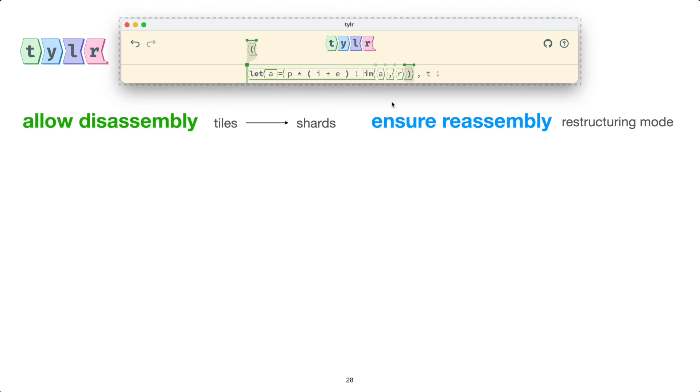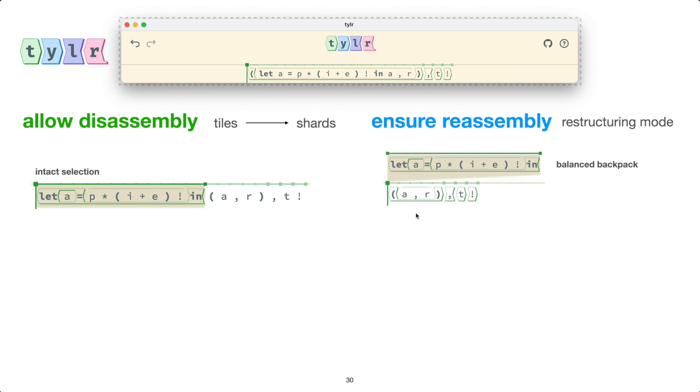So let me review those edits I just performed and re-explain what's happening with some new terminology. So the first selection I picked up consisted of a complete tile. And whenever a selection consists of complete tiles, we call the selection intact. Picking up a selection then enters restructuring mode. And this region above the line is called the backpack. And furthermore, if the selection I picked up is intact, then we can say that our backpack is balanced. And whenever our backpack is balanced, I can move freely in and out of tiles, since putting down this intact selection doesn't threaten any of the existing tile structure.